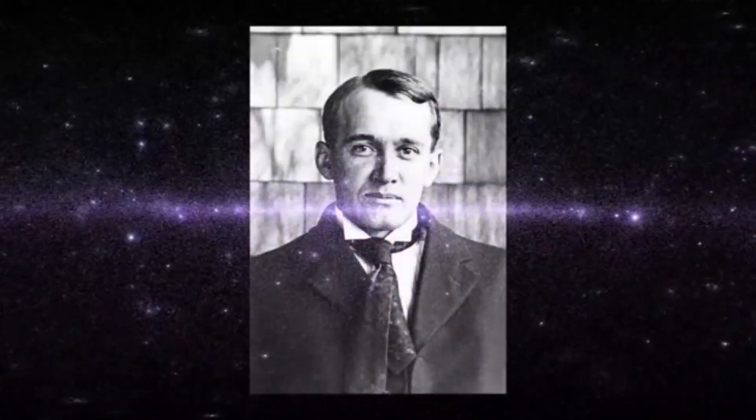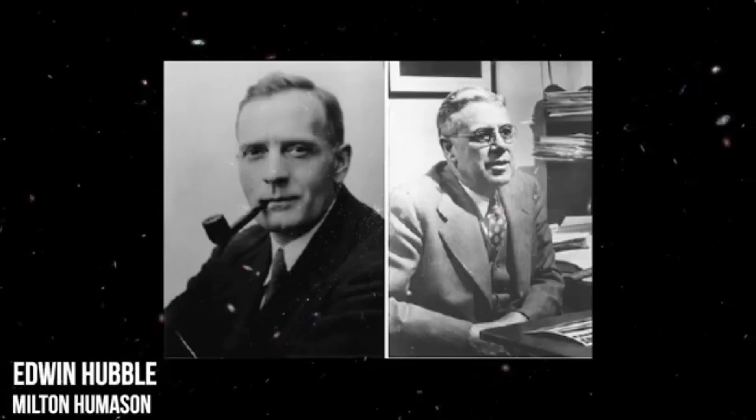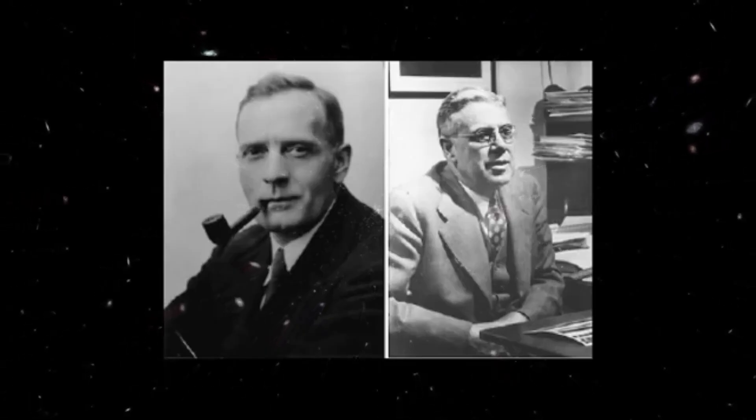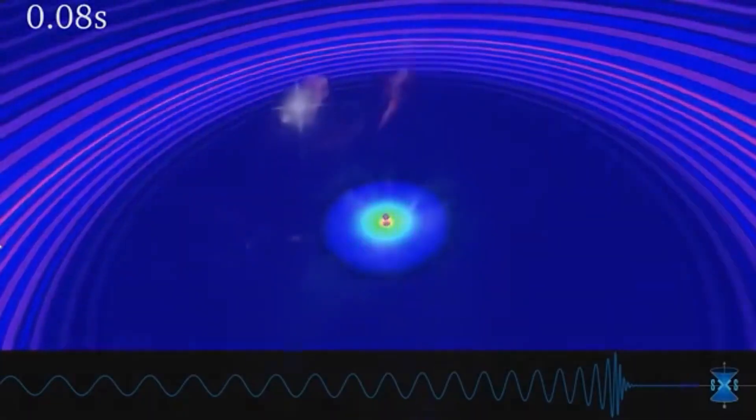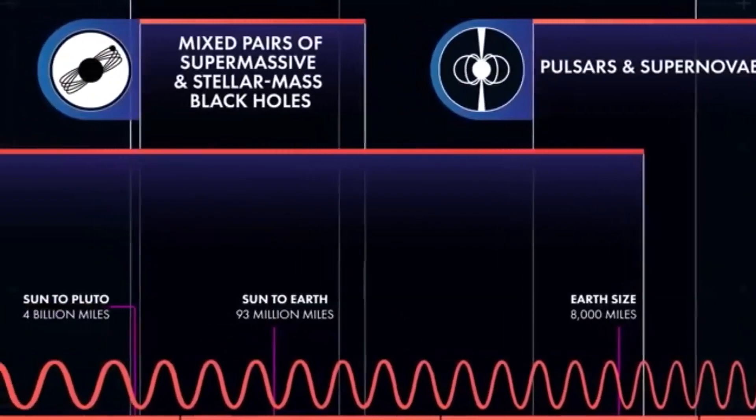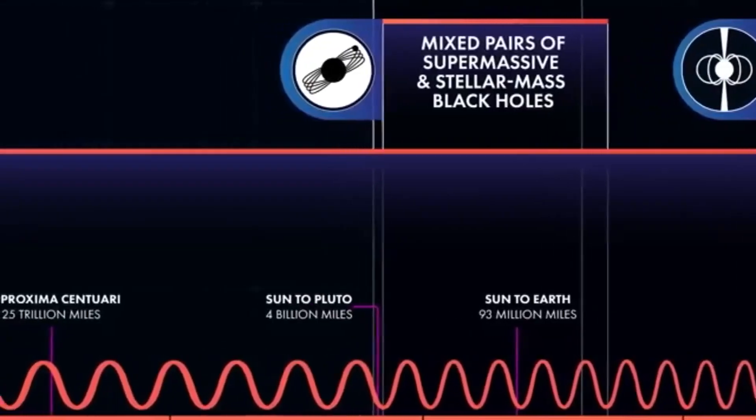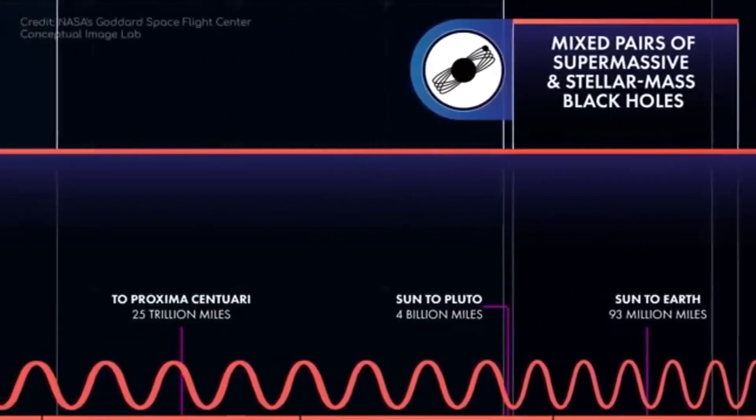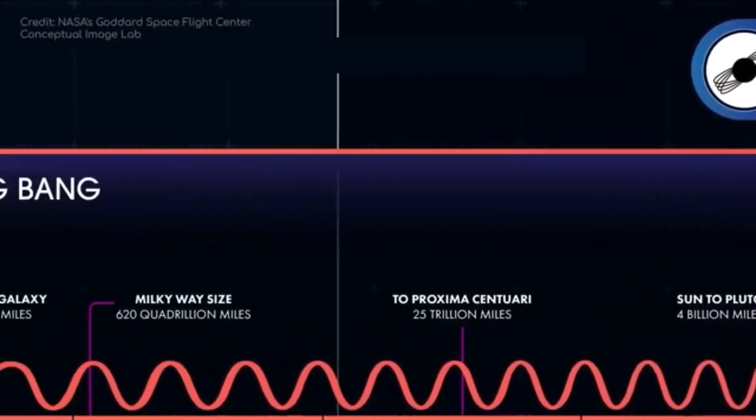This suggests that dark energy, as we currently understand it, would still be present in this hypothetical universe devoid of matter. In essence, if every quantum field in the universe was set to its lowest energy state, we would arrive at the zero-point energy of space. In a universe containing dark energy, a cosmological constant, or the zero-point energy of quantum fields, it's plausible that the zero-point energy wouldn't be truly zero. As the universe continues to expand and cool, there will come a time in the distant future when radiation becomes the dominant component. However, there's also a period in the universe's history, not in the future but in the distant past, when something else besides matter and radiation held dominance.